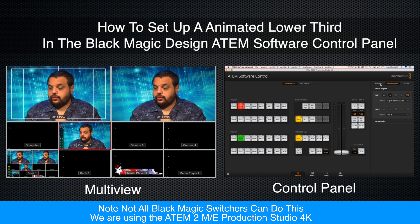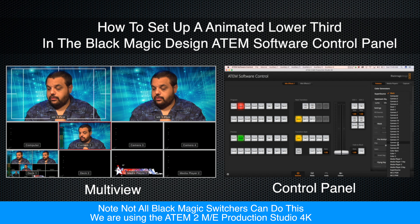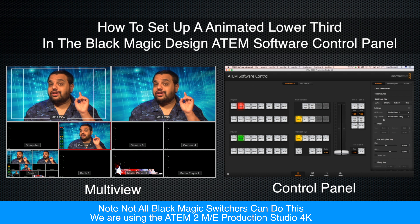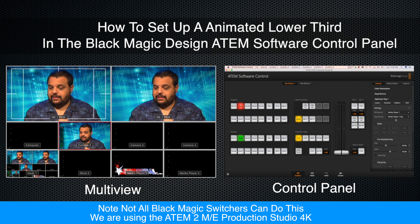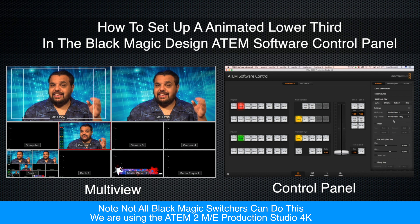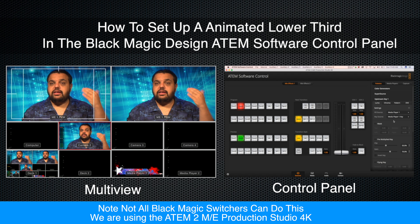Now go to the next tab and choose Upstream Key 1. Come down to where it says Media Player 1, make sure Media Player 1 is selected, and for Fill Source set it to Media Player 1. For Key Source, make sure it's set to Media Player 1 Key. That's going to allow us to use the alpha channel built into our key, so when it comes up it's just our lower third and we get rid of the background.